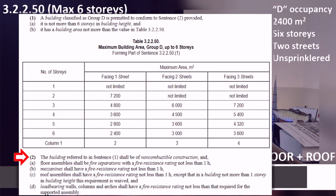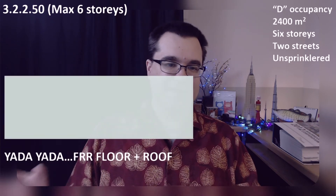Since we've met all the requirements in sentence one, we can now move on to sentence two. What this article says is that this building shall be of non-combustible construction — that's the first requirement. And then we also find the requirements for the fire resistance rating for the floor and the roof: they are a minimum of one hour each, or as stated, not less than one hour each. We've solved our example.